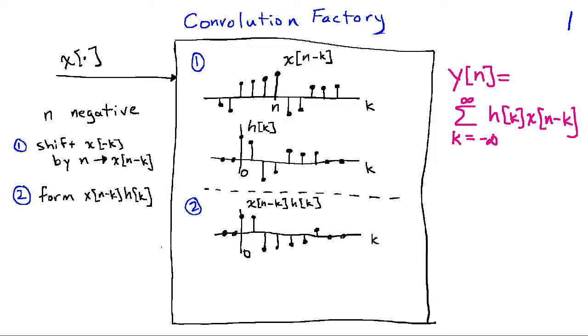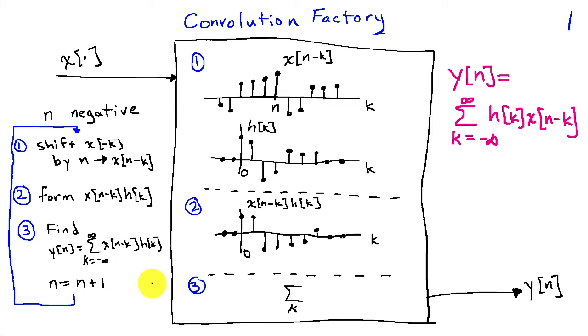Then we're going to form the product of x of n minus k and h of k. And then in our third step, we're going to evaluate the sum over all k of the values in this product. And that will give us the value y at time n.